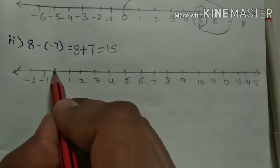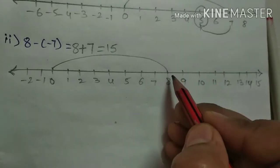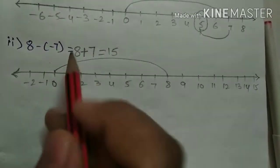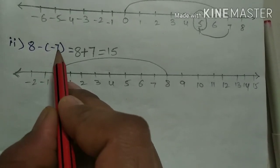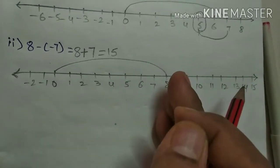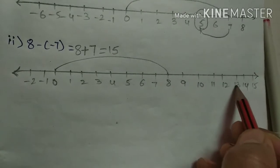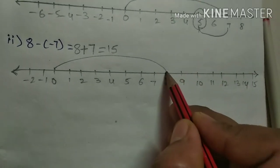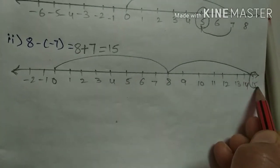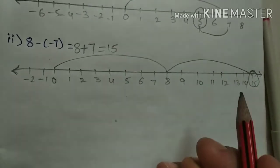First, move from 0 to 8. Here we are subtracting a negative integer, so while subtracting a negative integer we should move to the right side of the number line. Move now: 1, 2, 3, 4, 5, 6, 7. So the answer is 15. Correct — it came out right like this.